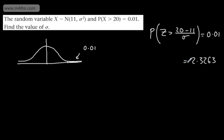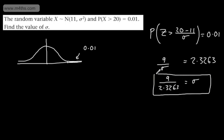We can say that this is going to be now equal to 20 minus 11, which is going to end up giving me 9, divided by σ. So if I just swap these over, I can now say 9 divided by 2.3263 will be equal to σ. And then we'll just push it through the calculator and get a value for σ, which is the standard deviation.